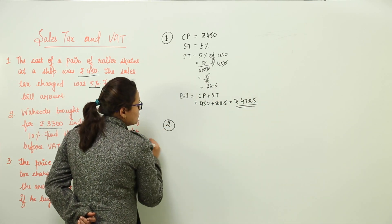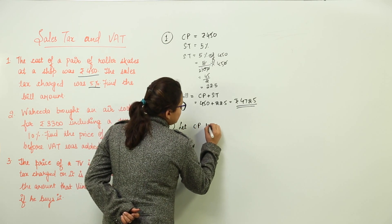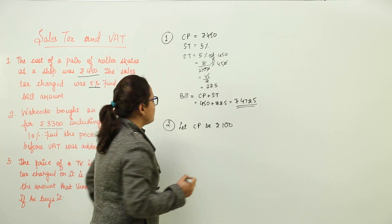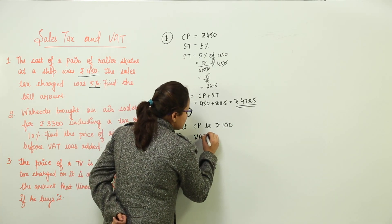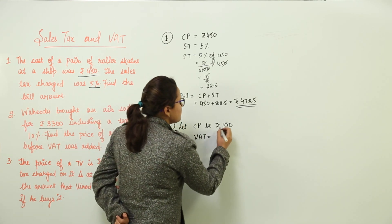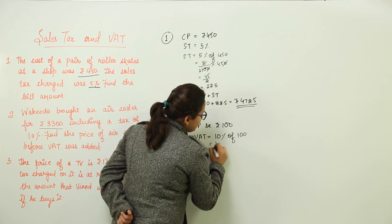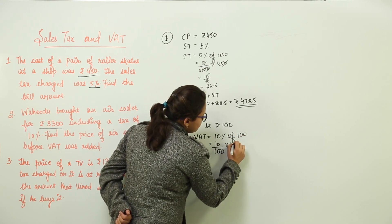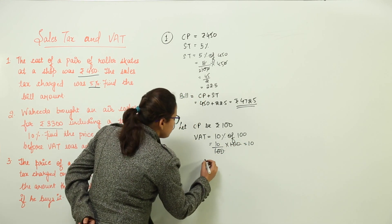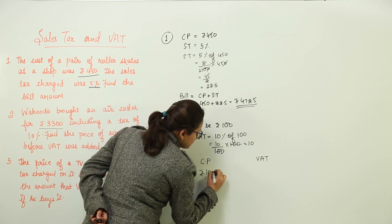First of all, let us assume that the CP is ₹100. Let CP be ₹100. Now tell me, if CP is ₹100, what will be the VAT on this? If VAT is how much? 10% given to us. So how much will be VAT on ₹100? 10% of 100, we get 10 upon 100 into 100, that is ₹10.